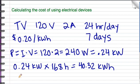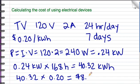Then we multiply that by the cost per kilowatt hour. So 40.32 times 20 cents per kilowatt hour is $8.06. Now just because it only costs $8.06 to leave your TV on for a week doesn't mean you should leave your TV on for a week.